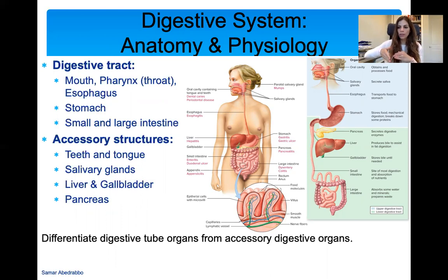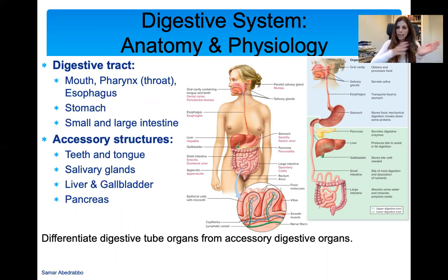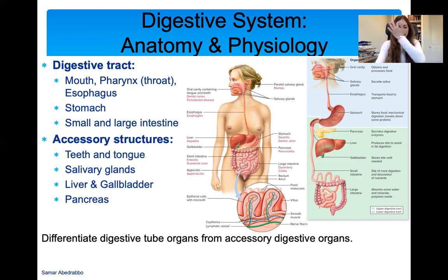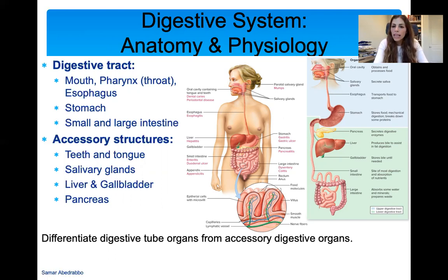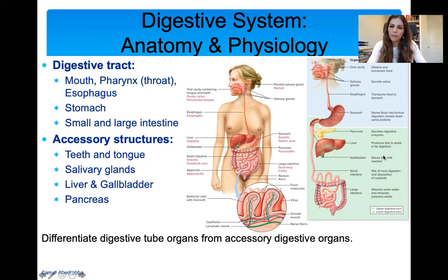That's how food passes through this tube — from mouth, pharynx, esophagus, stomach, small intestine, large intestine, to the anus. Accessory structures that aid in this process are the teeth and tongue, and salivary glands. Teeth and tongue help with mechanical digestion, and salivary glands help with chemical digestion through enzymes that further break down food. The liver and gallbladder help with digestion of fatty foods, and the pancreas plays its role in secreting digestive enzymes.